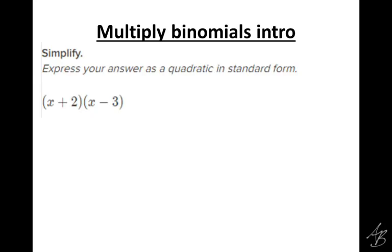The first of those is this one here. It says multiply binomials. Does anybody know what the prefix bi means? Two. So a binomial is what's called a polynomial that has two terms in it. When it says multiply binomials, we have two terms here, which would be a binomial, times two terms here, which is a binomial.